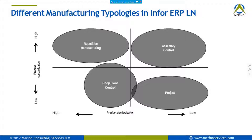Also, a lot of people would know project-based manufacturing in ERP LN, but fewer people are aware of the repetitive manufacturing and assembly control modules — and that's a pity, because assembly control is a very strong module. We position it in an area of high process standardization with a strong focus on process, and low product standardization, where products being produced are all pretty unique or with specific configurations linked to a certain customer.